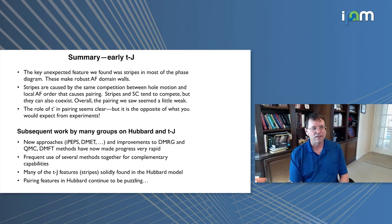Subsequently there has been a recent explosion of work in this problem as the computational methods have improved. All of a sudden we can now treat these very difficult systems in a way that we couldn't before. There's been new approaches such as iPEPS, density matrix embedding theory, and improvements to DMRG and quantum Monte Carlo, dynamical mean field theory methods. All of this has made progress now very rapid. What we frequently like to do now is use several of the methods together to use their complementary capabilities. Many of these features that I just was talking about in the TJ model have now been found in the Hubbard model and fairly well established. The biggest puzzling feature is the superconductivity, so that's still a puzzle.